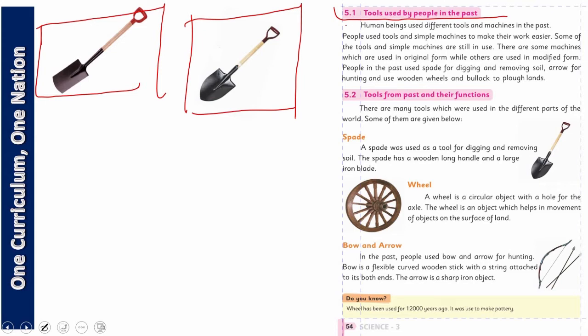This is your task to tell me. Should I read the text? Okay. Human beings use different tools and machines in the past. People use tools and simple machines to make their work easier. Some of the tools and simple machines are still in use.